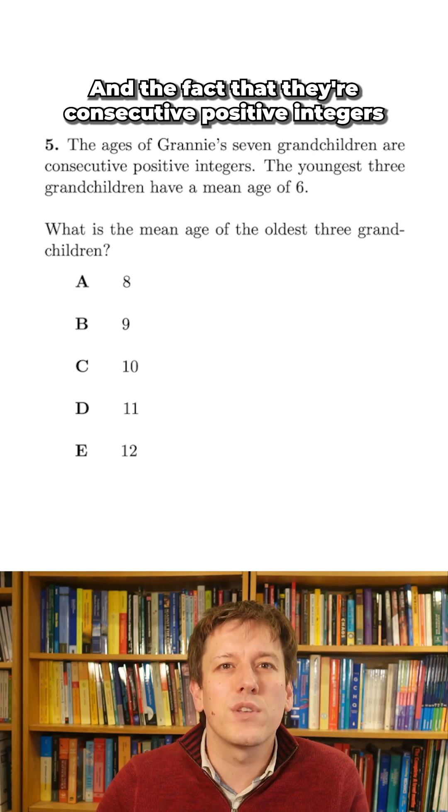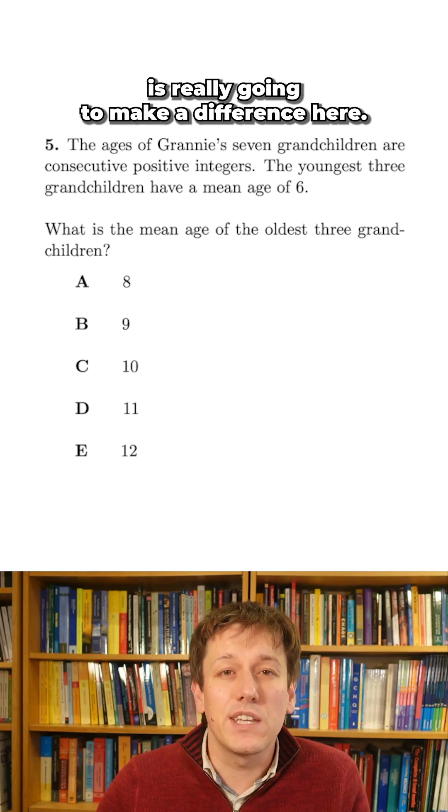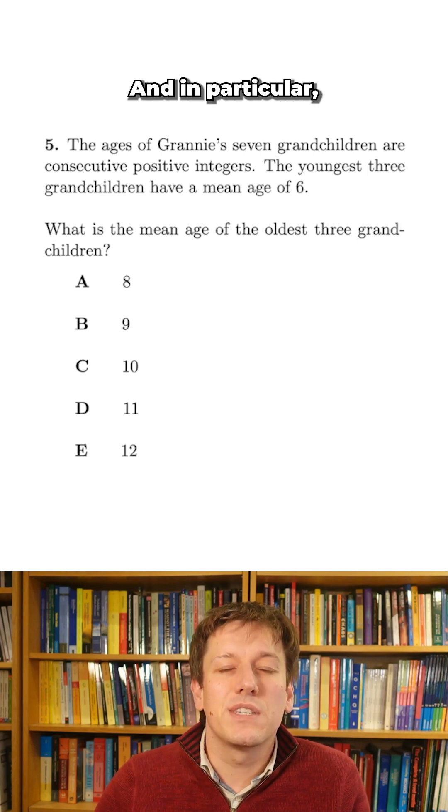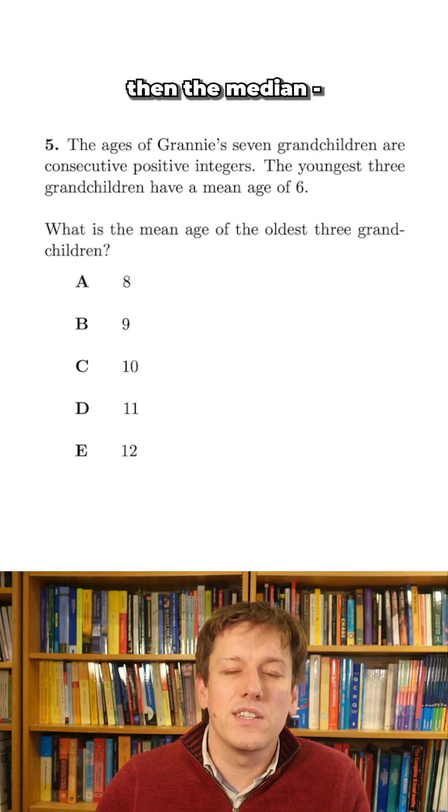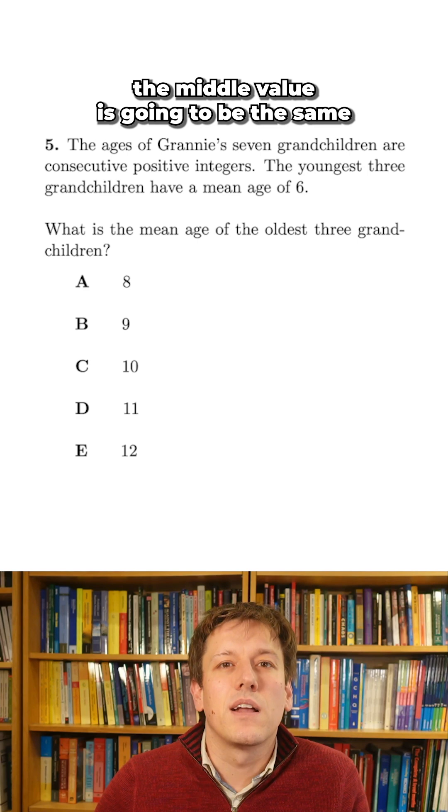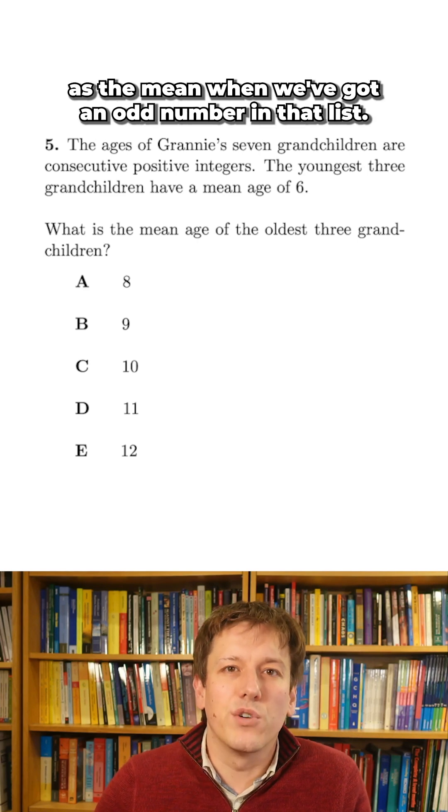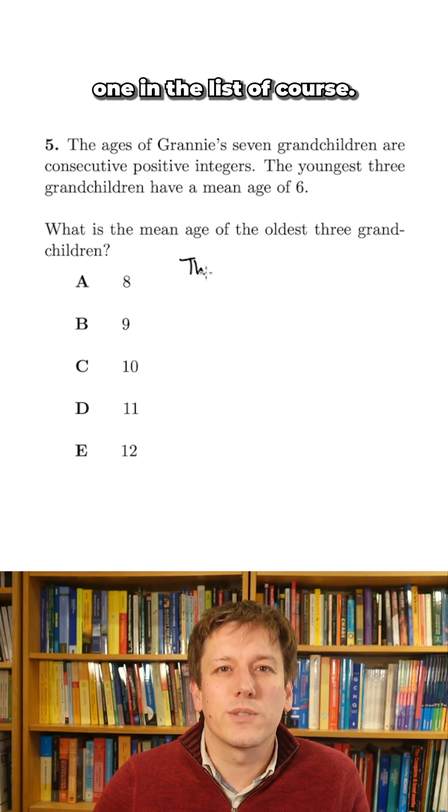The fact that they're consecutive positive integers is really going to make a difference here, and in particular when values are evenly spaced out like consecutive integers are, then the median, the middle value, is going to be the same as the mean when we've got an odd number in that list, so the median is one in the list of course.